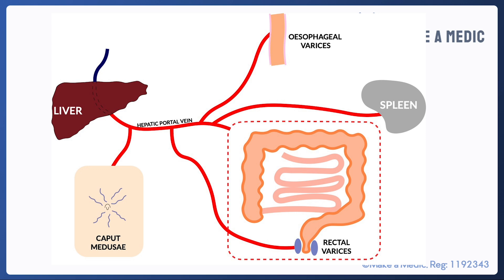One other sign worth mentioning is that the hepatic portal vein also has a branch which goes to the spleen. So when blood backlogs into the portal circulation, patients will also get splenomegaly.